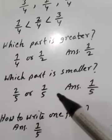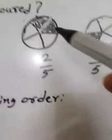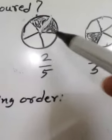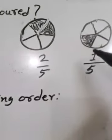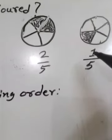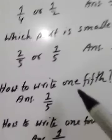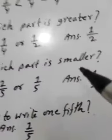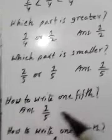Which part is smaller — 2 by 5 or 1 by 5? This is 2 by 5 and this is 1 by 5. 2 by 5 is greater and 1 by 5 is smaller. So 1 by 5 is the smaller part.